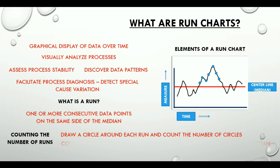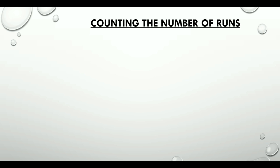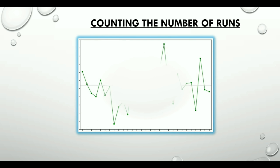We can count the number of runs in two ways: either draw a circle around each run and then count the circles, or count the number of times the sequence of data points crosses the median. Let's quickly look at a sample run chart to see how many runs are there. So if you follow the first method and start circling the runs, here we are, we have 14 runs.